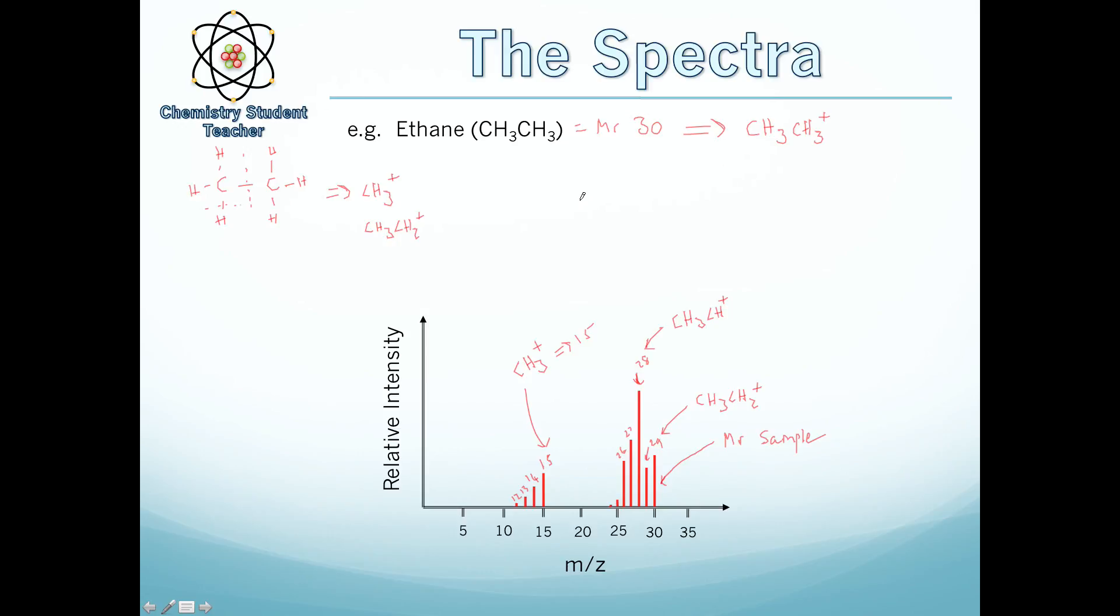So the biggest m/z usually represents the MR of the sample, and then the smaller ones, smaller m/z values, represents fragments.